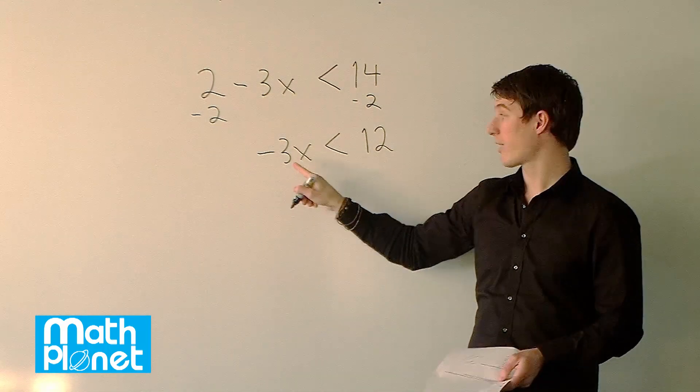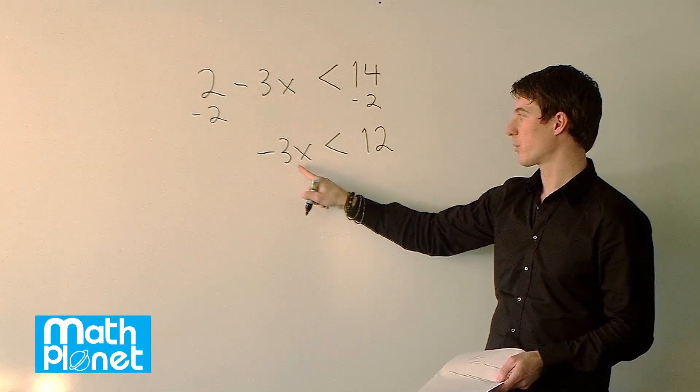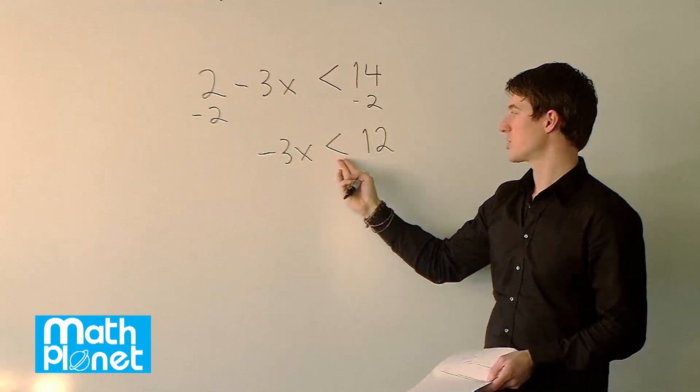And now at this point we're going to divide by negative 3. Now we need to be very careful here. Like I said, when we're dividing or multiplying by a negative number, then this changes sign.